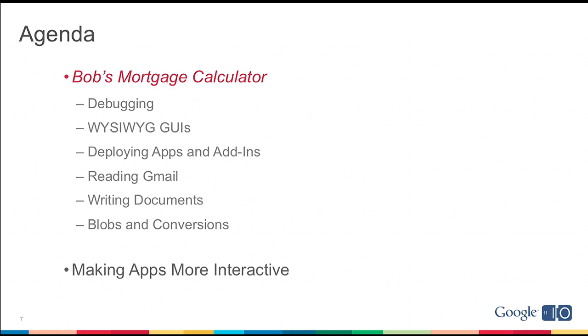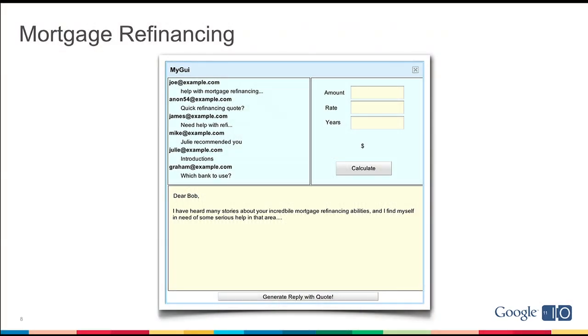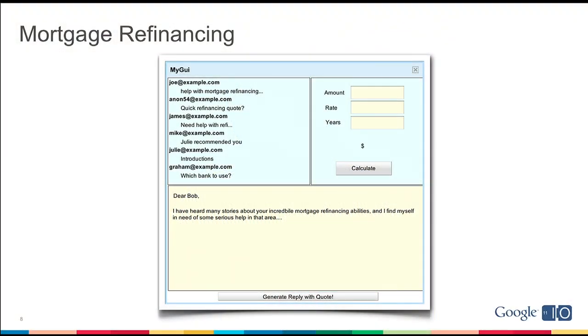It's going to automate a lot of his workflow process. This is going to involve a lot of pieces, from debugging to GUIs, how to deploy an app, using Gmail or writing documents, things like blobs and conversions that will become clearer as we go through them. Here's the app we want to build today — Bob's calculator. On the top left is a panel showing emails from Bob's Gmail account that have something to do with refinancing a mortgage. On the top right is a mortgage calculator where Bob can fill in the amount, the rate, and the years, or even have it auto-populated from an email. At the bottom is a button that says Generate Reply with Quote.